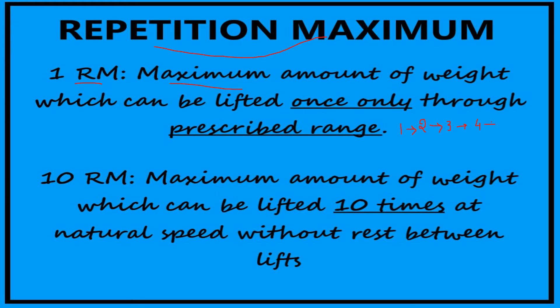And when you take it to 5kg, you suddenly realize that you are not able to complete that range of motion because it is heavier. So you somehow managed to take it to only half range. So what will be your 1RM? Your 1RM would be equal to 4kg, because you were able to take that 4kg against gravity for the full range of motion. So your 1RM is equal to 4kg.